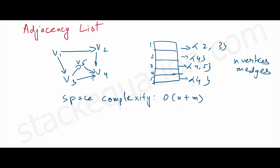In this video we'll discuss what is an adjacency list. Here we have a graph with five vertices and there are edges connecting these vertices. In an adjacency list, we represent the graph where vertex one has an edge towards v2 and v3, so we link v2 and v3 to vertex v1.